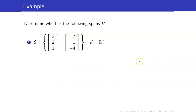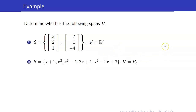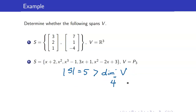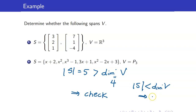What about its spanning set? For the previous two-element set, the cardinality of S is less than the dimension of R³, so we can say it cannot span V. For the five-element set, since the cardinality of S is greater than the dimension of V, we still have to check whether it spans — the only way we can conclude it does not span is if it has fewer elements than the dimension.